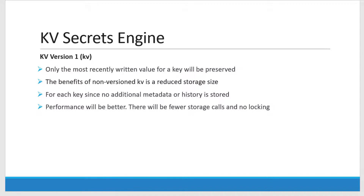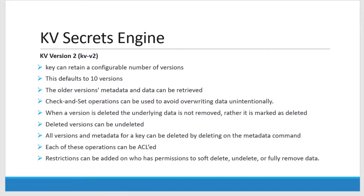The performance in version 1 will be much better because it doesn't need to navigate or search for the latest value. In version 2 of the key-value secret engine, it can maintain N number of versions as configured, and the default number of versions it maintains is 10. Older version metadata can also be retrieved, providing an additional option to prevent unintentional data overrides. Any data deletion will not be a hard delete — it will be a soft delete, marking it as deleted — and you can control ACL operations against versions as well.